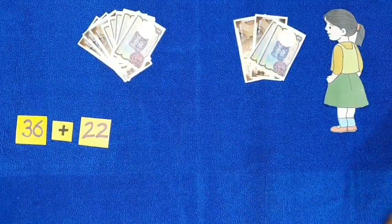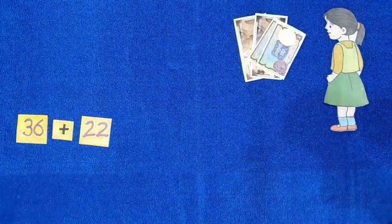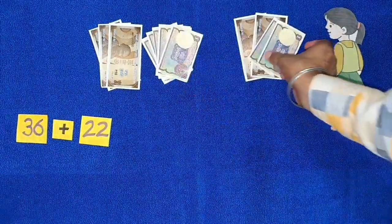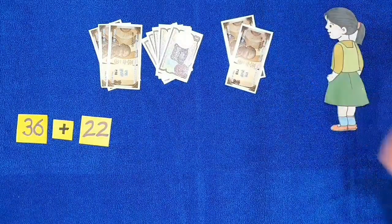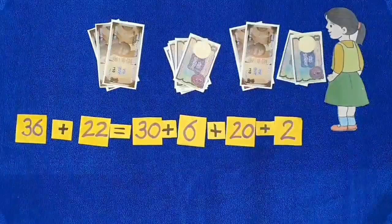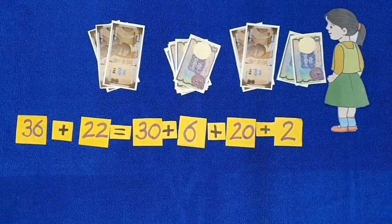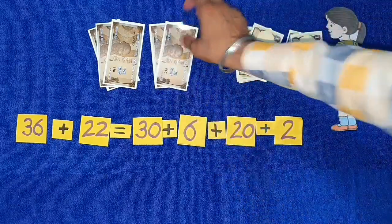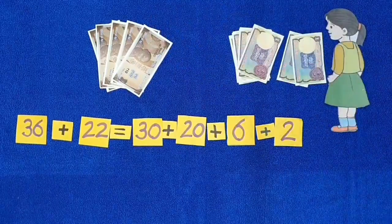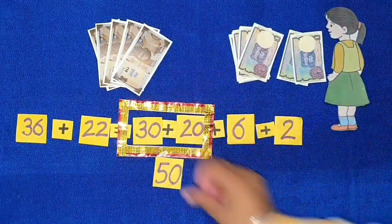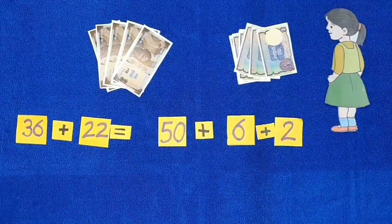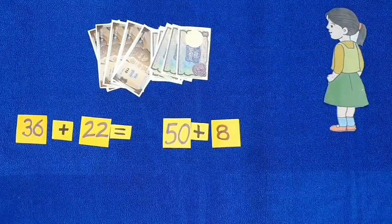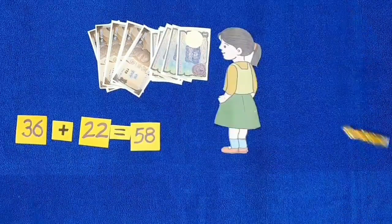In another method, we will split 36 rupees and 22 rupees in a different way. 30 rupees and 6 rupees equals 36. 20 rupees and 2 rupees equals 22. We put all the 10-rupee notes on one side and 1-rupee notes on another side. Now 30 and 20 add to make 50 rupees. 6 and 2 rupees make 8 rupees. 50 and 8 rupees add up to make 58 rupees. So again Harman has 58 rupees.